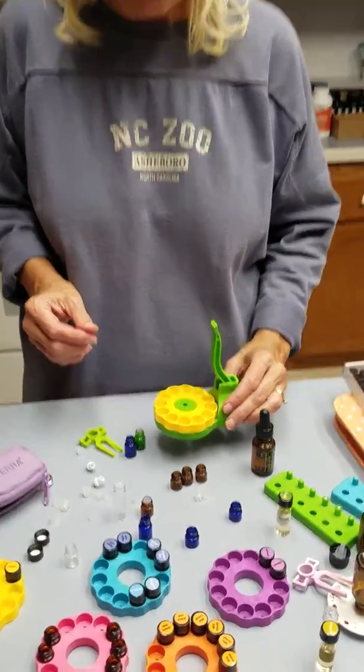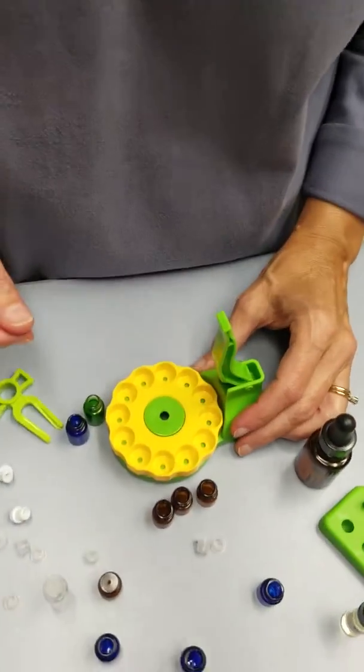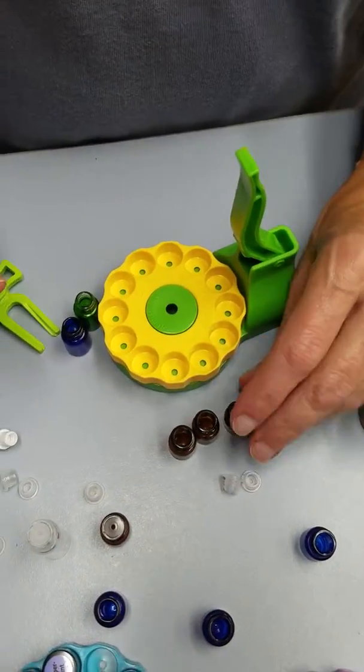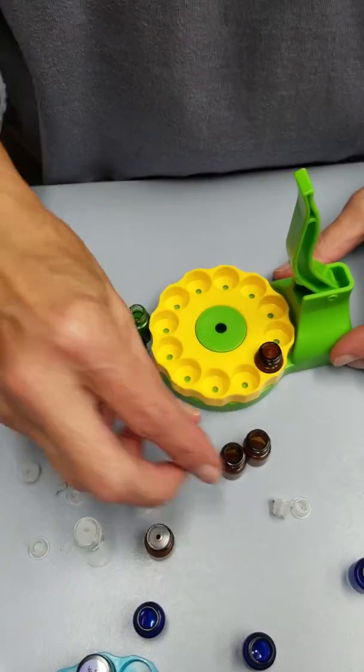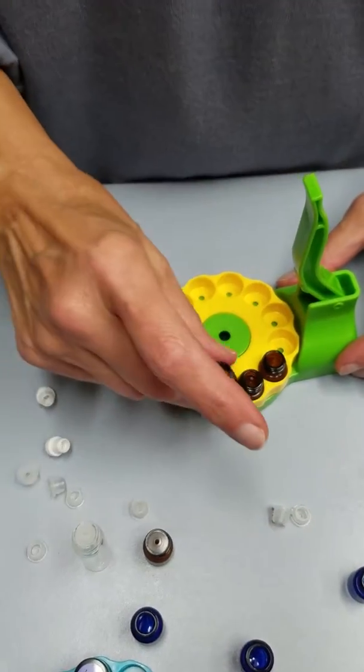It saves your thumb when putting the little inserts into our sample bottles, which is what we do much of at doTERRA. So you just take your little sample bottles and put them in the press.